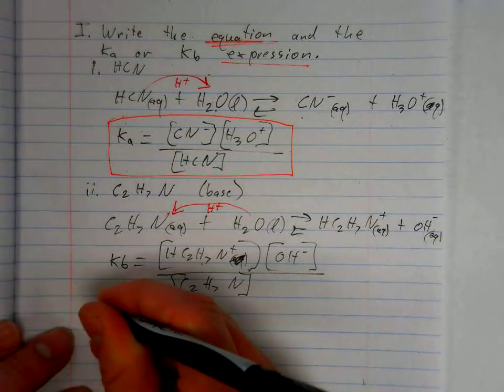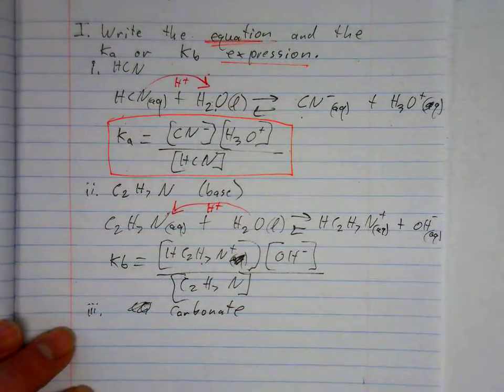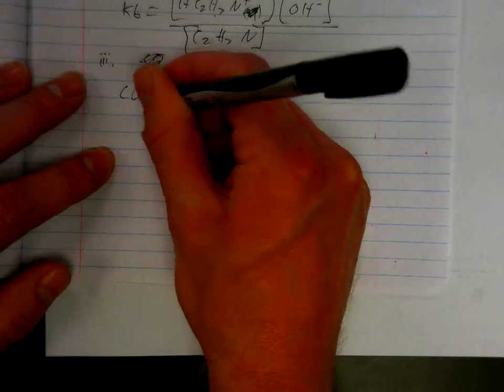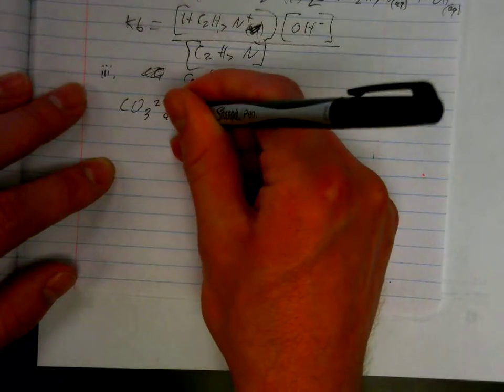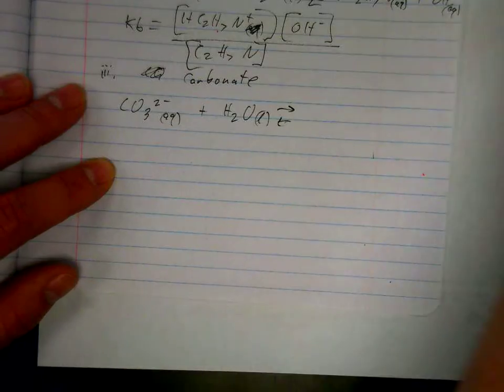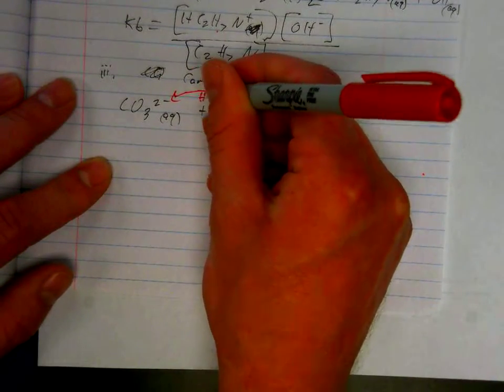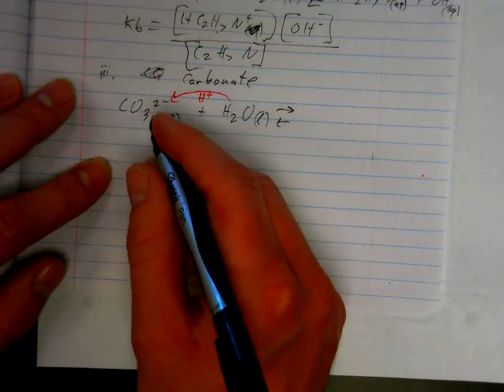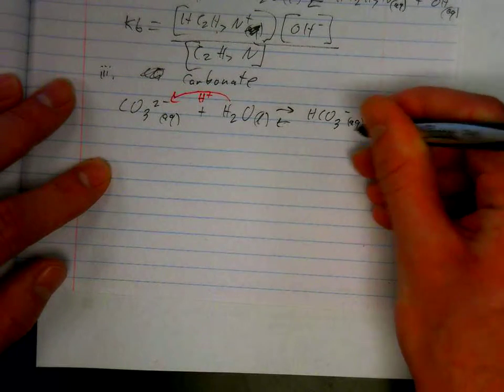Two more quick examples. If we have carbonate, we'll need to remember the formula since we're given the name this time. Carbonate, CO3 two minus. Plus H2O. So they react with water for each one. Now we can predict that carbonate is going to accept a proton since it's negative. It's trying to become more positive, trying to become more neutral. So carbonate acts as the base. As a result, we get HCO3 minus and OH minus.